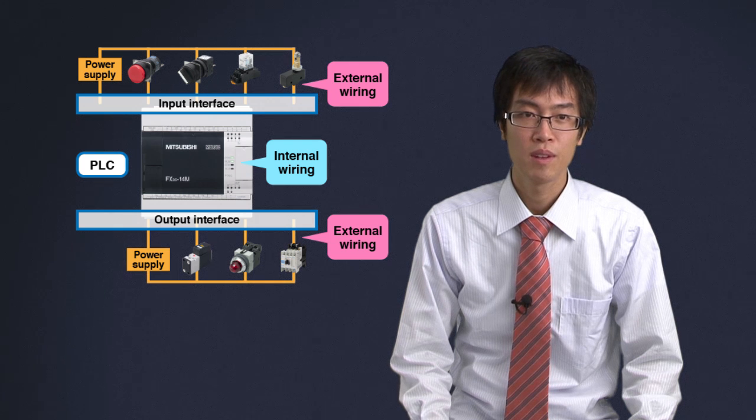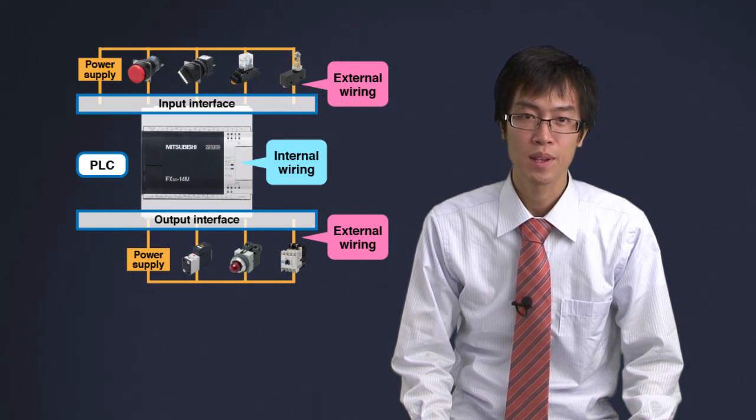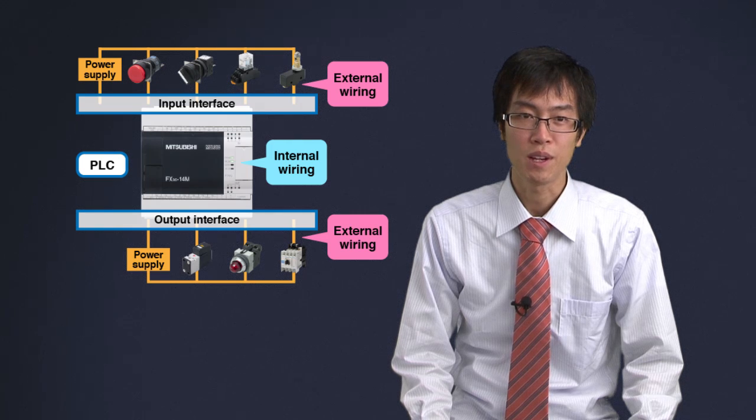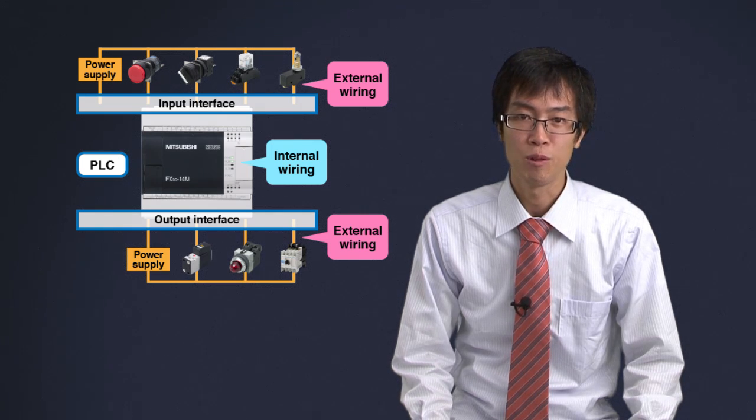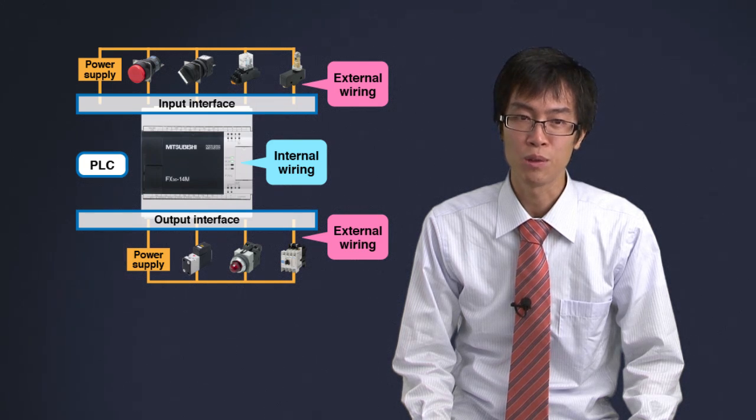A PLC has internal wiring and external wiring. Internal relays and terminals are connected inside of the PLC. We call this internal wiring. External wiring refers to the connection between external devices and the terminals of the PLC.